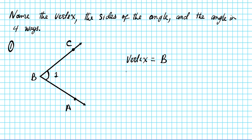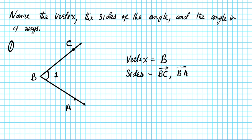Now let's move on to the sides of the angle. These two rays with a common point, vertex B, are the sides of the angle. We start from the vertex and go in the direction of the two rays. So the first side is ray BC, starting from B and going toward C, and the second side is ray BA, starting from B and going in the direction of A.